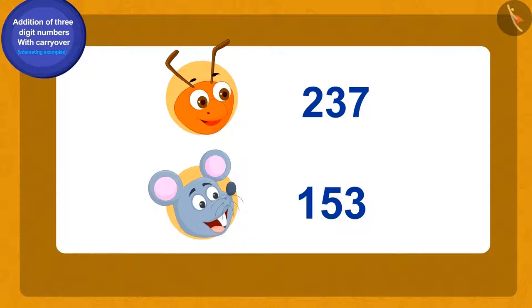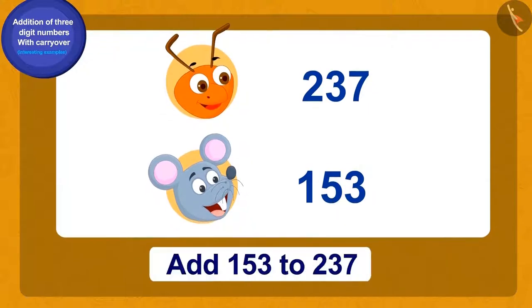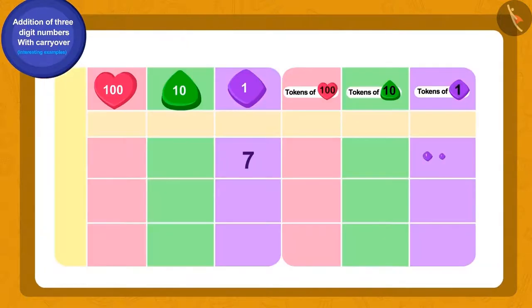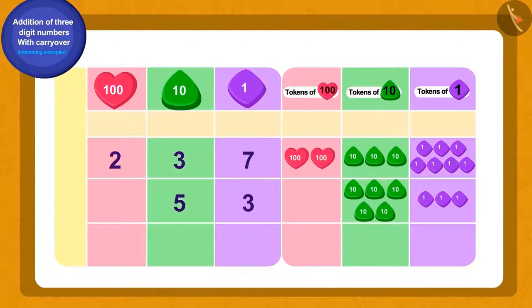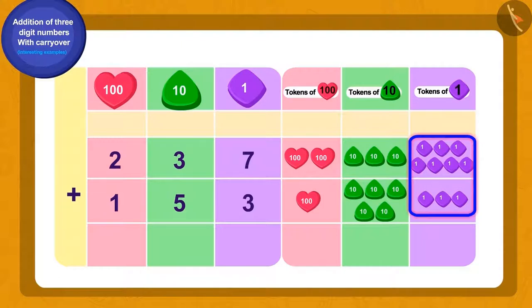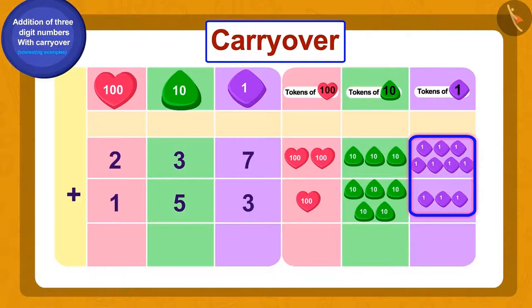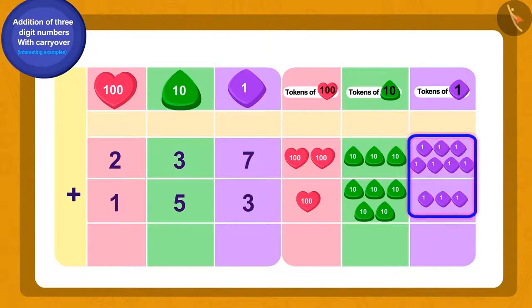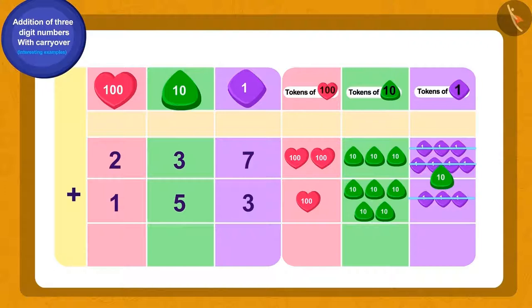To find the total number of animals we will add 153 to 237. What shall we do first? 237 and 153 will be written using tokens. We have a total of 10 ones tokens. What can we do now? Yes, we will use carryover.